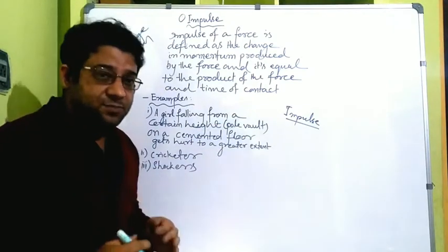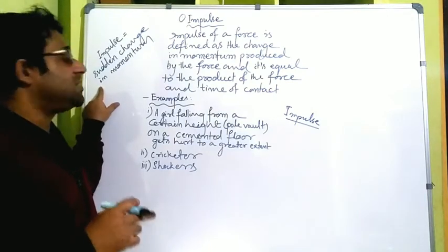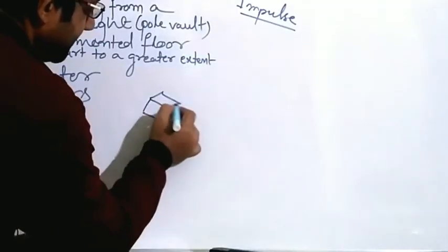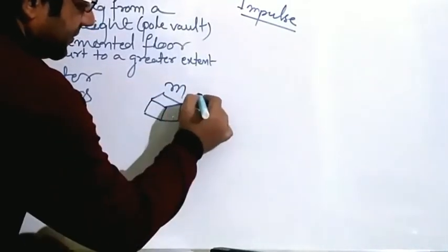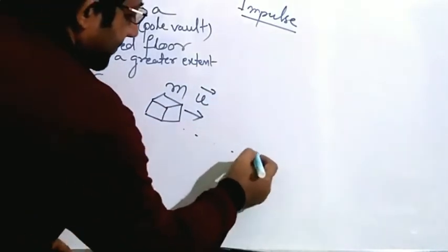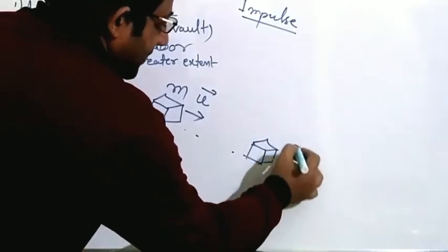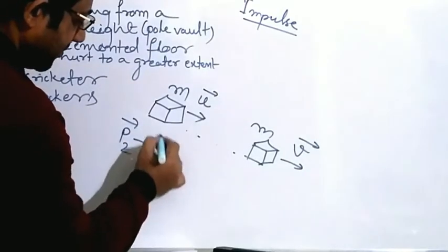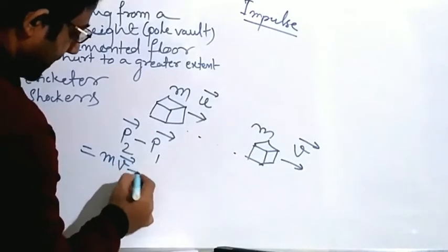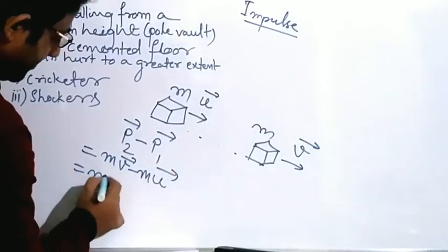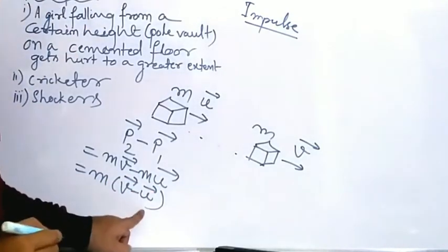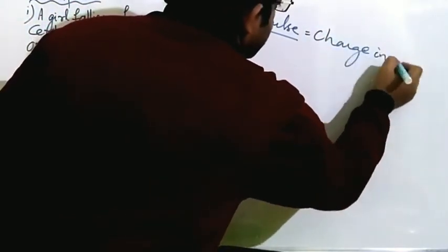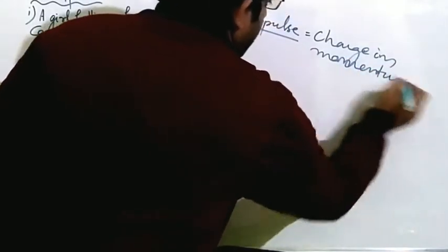The impulse word is popularly used for a sudden change in momentum only. But the impulse is equal to the change in momentum — that is just for understanding. As far as the definition is concerned, it is just a change in momentum. So let us say this is a body of mass m moving with velocity u, and after some time its velocity has been changed to v, with mass remaining m. So final momentum minus initial momentum equals mv minus mu, which equals m(v minus u). This is the change in momentum, and this only is impulse.